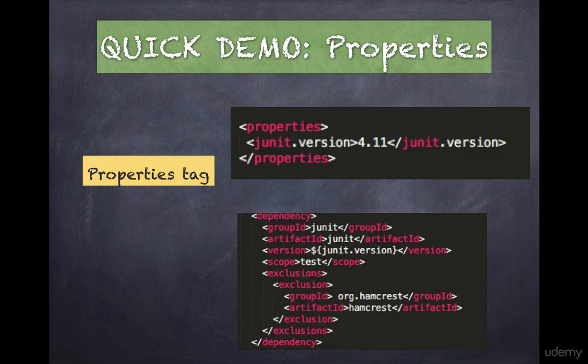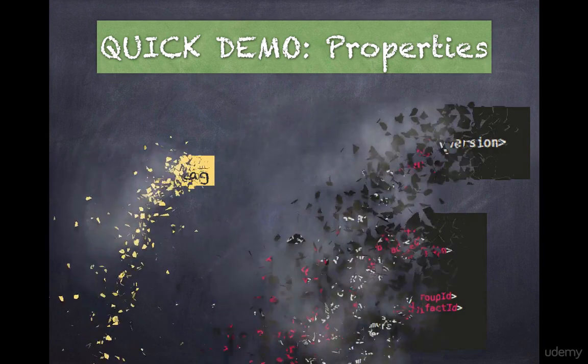The pom.xml file with the JUnit version is declared as a property. Notice the use of the $ and curly braces syntax in the version element of the JUnit dependency. This is especially useful when pom.xml has a lot of dependencies and you need to know or change a version of a particular dependency in your future applications.